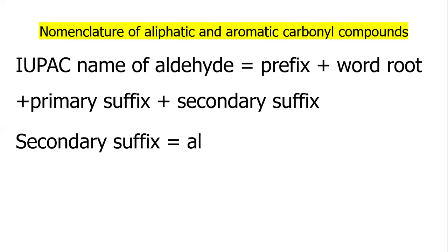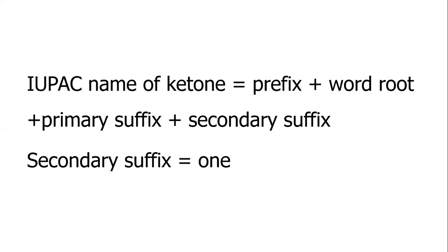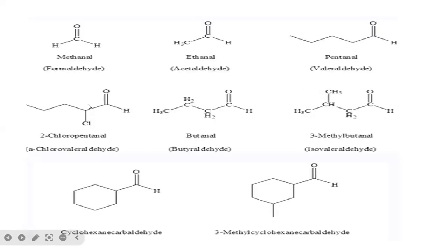In the secondary suffix, '-ol' is used in the case of alcohols, and '-one' is used in the case of ketones. Examples of alcohols include: methanol, pentanol, propanol, butanol, and 2-methyl butanol.